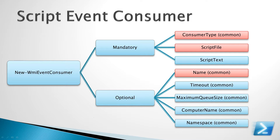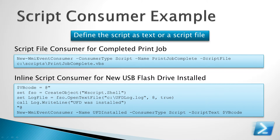So first let's go into a little bit of detail about the script event consumer. There are several mandatory parameters and several optional ones as well, and some of the optional parameters are common to all the different consumer classes. For the script event consumer we're going to need to specify the consumer type, which is 'script', and we'll see this in the example, a path to the script file that we want to call. I recommend that you also create a name so that you can reference the script consumer in future scripts. In the first example we're defining a script consumer to respond to a completed print job event. As you can see, this uses the new WMI event consumer cmdlet with three simple parameters to define the VBScript code that will run in response to this event filter.